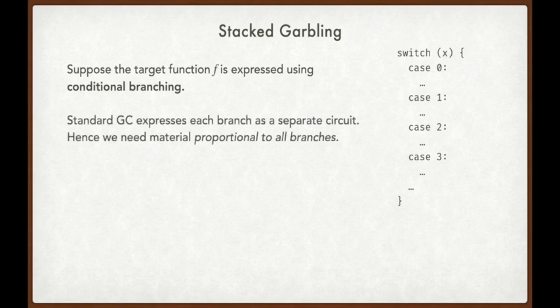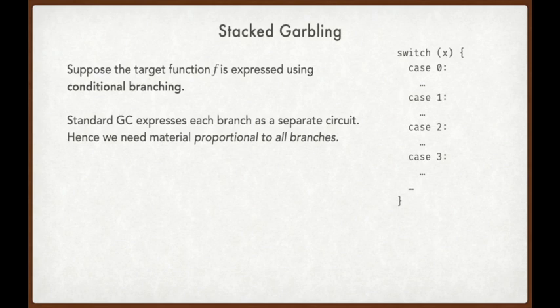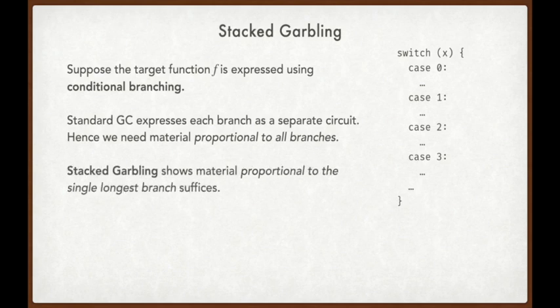Before stacked garbling, it was necessary to express a conditional by expressing each of the branches separately. If we think back to our garbled circuit protocol, this meant that the GC generator would encrypt each of the branches separately, constructing material for each of the branches, and then send all of this material to the evaluator. Thus, we needed material proportional to all of the branches. Stacked garbling showed that this amount of material is unnecessary. We can sacrifice the correct behavior of the inactive branches, which in some sense is not a sacrifice at all. What this means is that we only need enough material for the single longest branch.